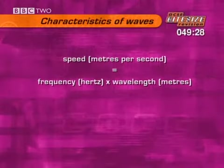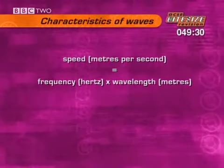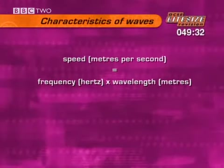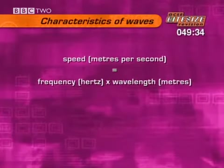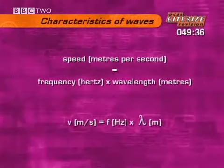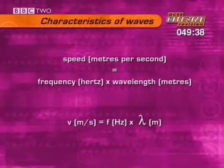You can calculate the speed of a wave. The speed of a wave in meters per second is equal to the frequency in hertz times the wavelength in meters. That's V equals F times lambda.